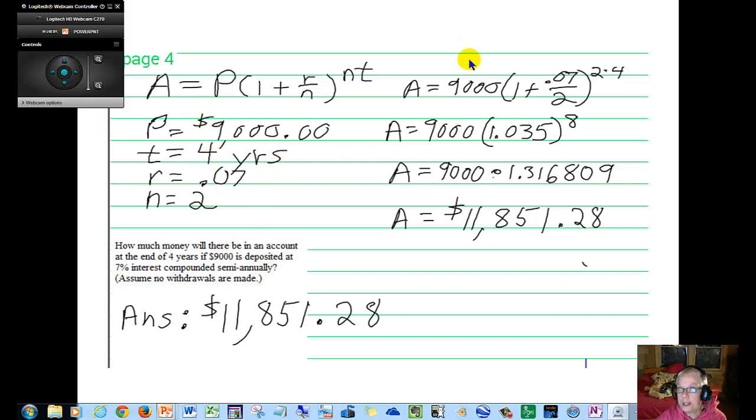So we take these numbers, we fill them in here, 9,000 times 1 plus 0.07 over 2 to the 2 times 4 power. It's very important that you follow order of operations here. Please excuse my dear Aunt Sally. Work in the parentheses first. 1 plus 0.07 divided by 2 is 1.035. Now take this number and raise it to this power. 2 times 4 is 8, so I'm raising 1.035 to the 8th power. That gives me this number. Then I multiply by my P number last. So when I multiply these, what I get is $11,851.28.